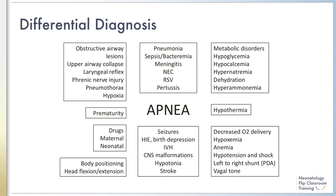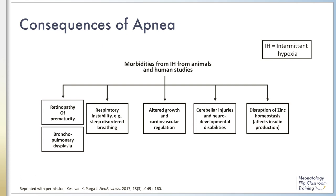Apnea is never normal in a healthy term infant. In preterm infants, apnea is often the result of immaturity of the respiratory control system, but it is important to note that apnea can also be a presenting sign of a whole host of other diseases and pathophysiology. A thorough physical exam and consideration of other etiologies causing apnea is essential. Please pause the recording and look through this list of causes of episodic or prolonged apnea — this is not an exhaustive list but covers the majority of etiologies in preterm and term infants. All these disorders produce apnea by direct depression of the central nervous system's control of respiration, by disturbances in oxygen delivery, or due to ventilation defects.